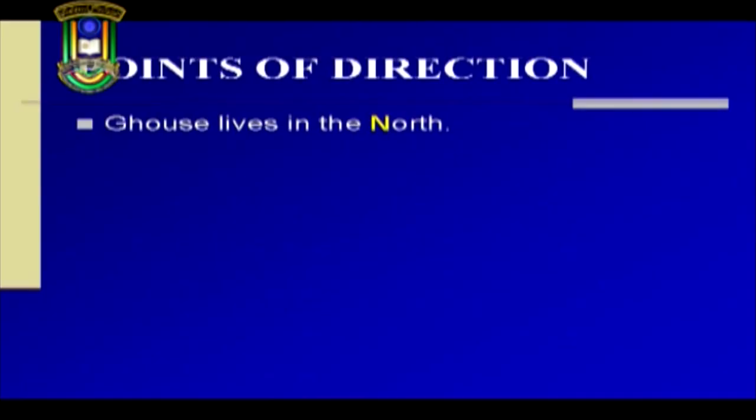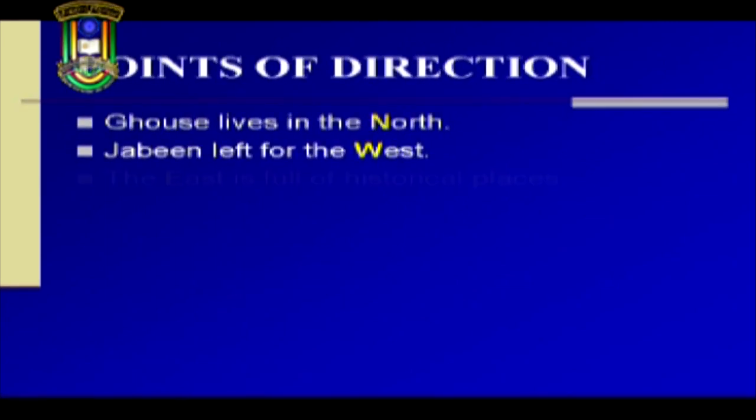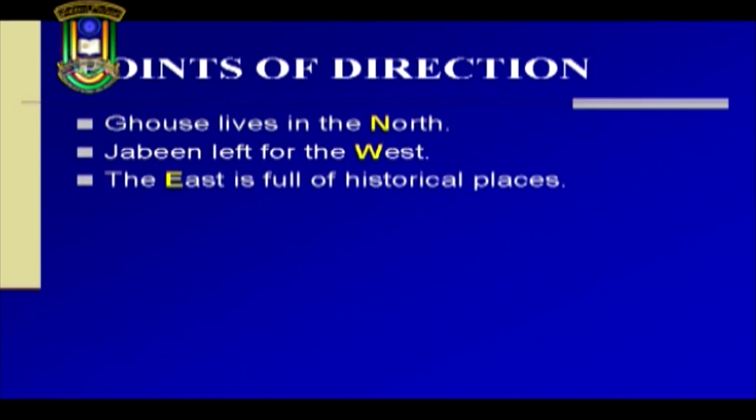I'll quickly tell you about one other very easy to remember use of the capital letter. Capital letters are used to indicate points of direction. Gauss lives in the North. Jabin lived for the West. The East is full of historical places. North, West, and East are points of direction and they have been capitalized. Like oceans, there are only four points of direction — East, West, North and South — so you don't have to remember much.